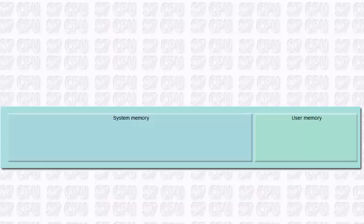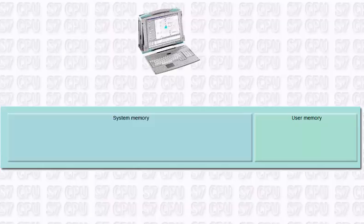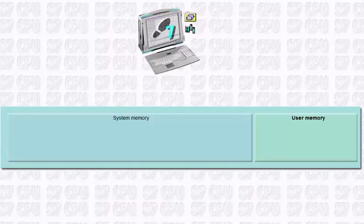We will now follow the course of a user program from the programming device through the various CPU areas of the user memory model. The user program and the parameters of the SIMATIC automation system were generated offline on a programming device using the SIMATIC Step 7 software.